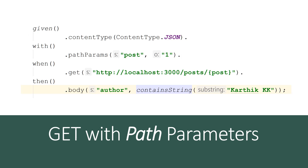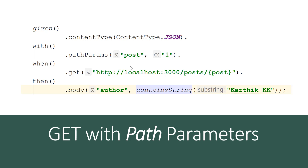GET with path parameters: as we saw in our last video with given/when/then, this time we have an additional option — with dot path parameter — where I'm passing the path parameter as 'post' with a value of 1. The path parameter acts as a key-value pair where 'post' is the key and '1' is the value. Within our URL we have 'post' in curly braces, and this key gets replaced by the value '1' when the GET method is called. This is how path parameters are manipulated during execution.